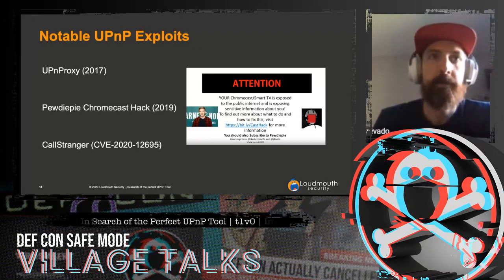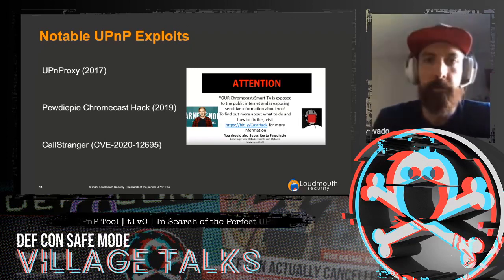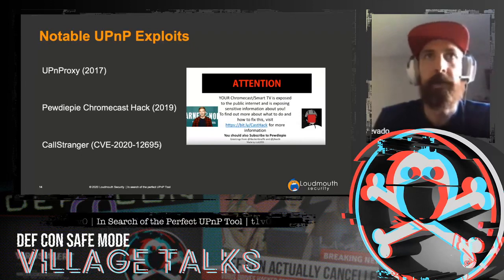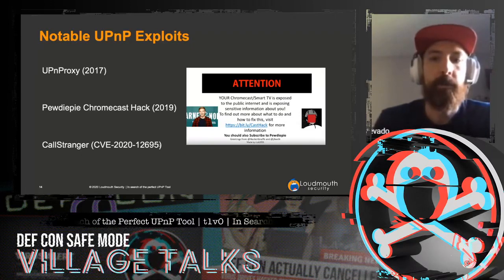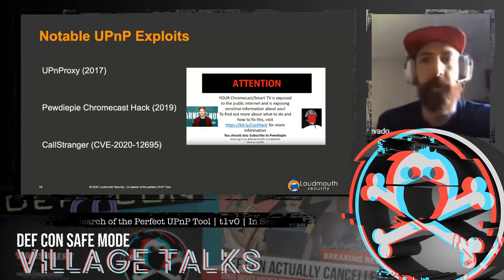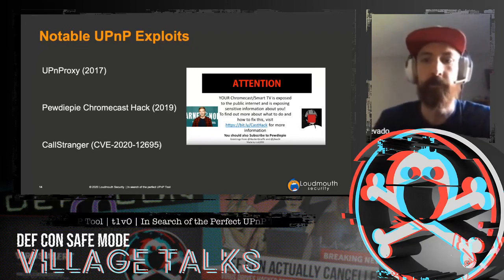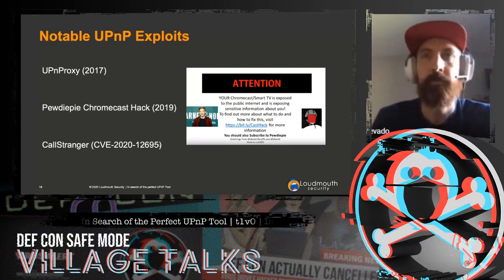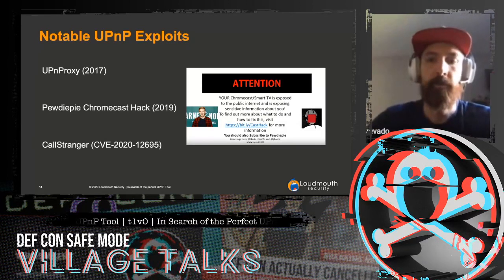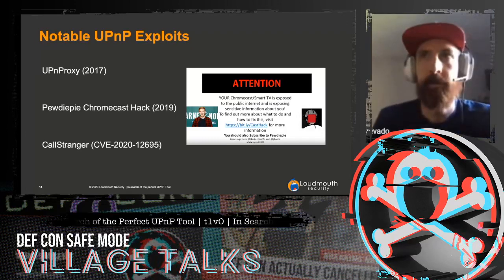One of the more recent ones is a 2020 vulnerability called CallStranger. Basically, the researcher looked at the UPnP spec and noticed bad design — the event subscription callback has no validation, so you can specify any address on the internet as the callback. You can add query strings to do data exfiltration out of a network. There's also an amplification issue because you send a very small request and the notification forwarded to the callback server is much larger, which could be used for denial of service.